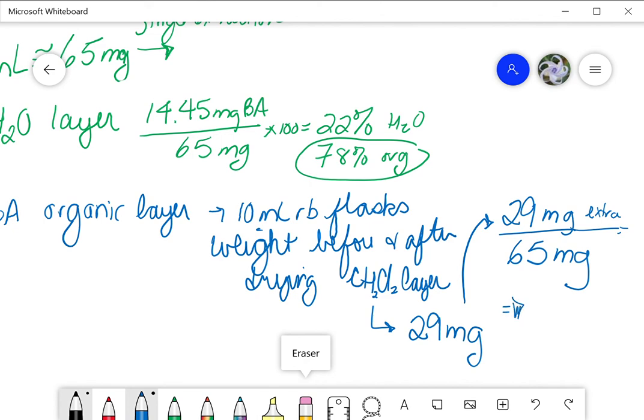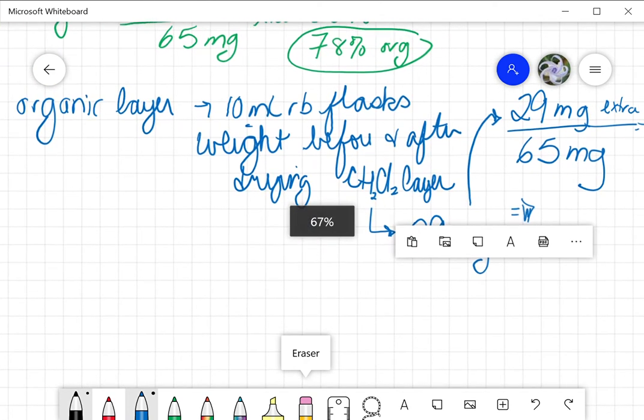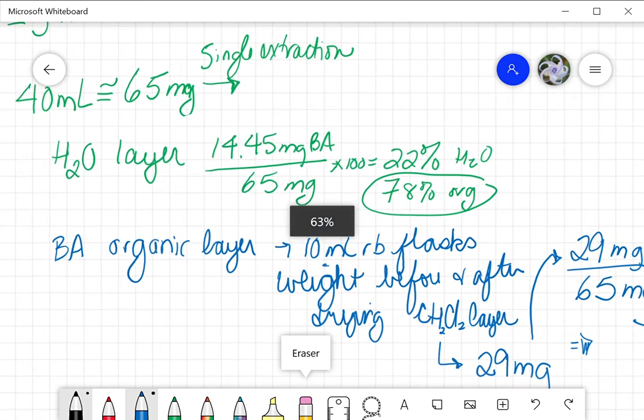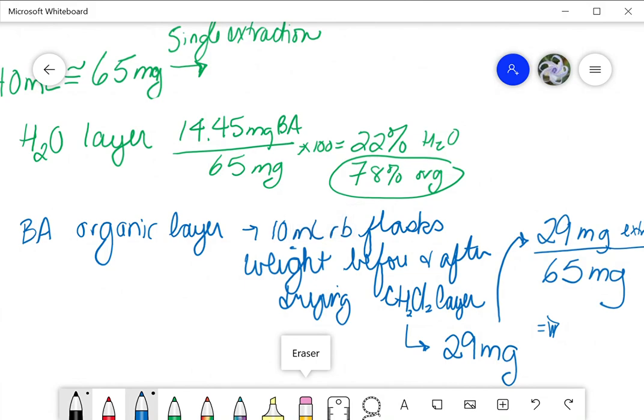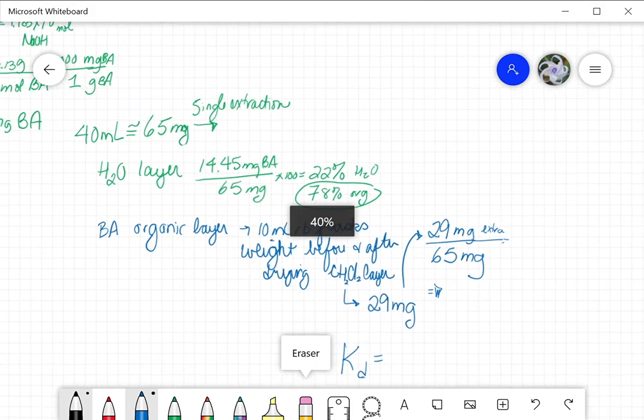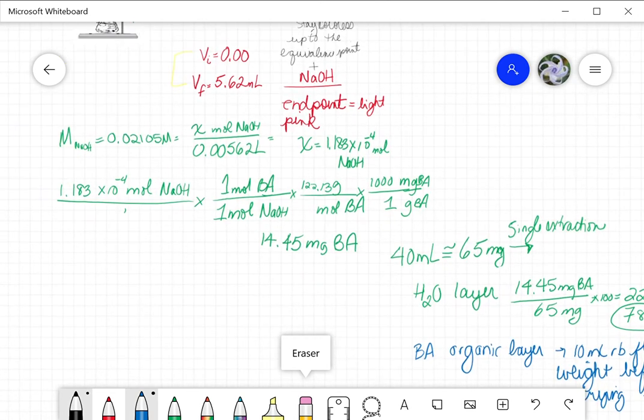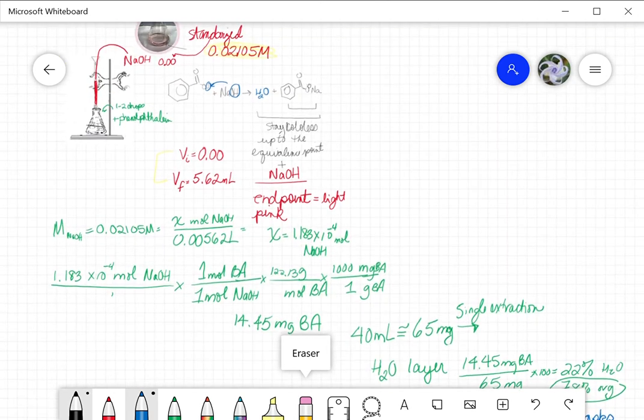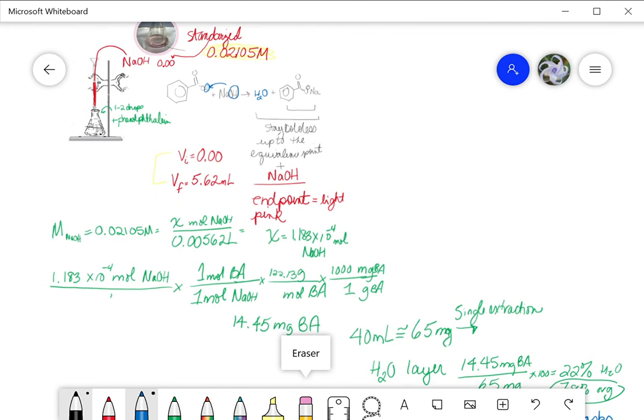So these are two different calculations, and there's another calculation that you're going to do—your partition coefficient calculations as well. But this video is just helpful to get you through doing the titration and then doing the calculation so you can calculate the number of milligrams of benzoic acid that was present in your aqueous layer that you titrated.